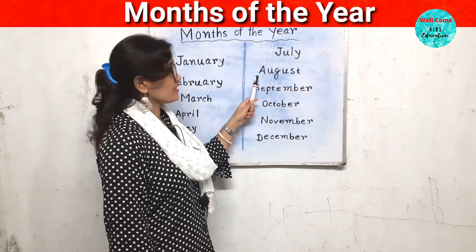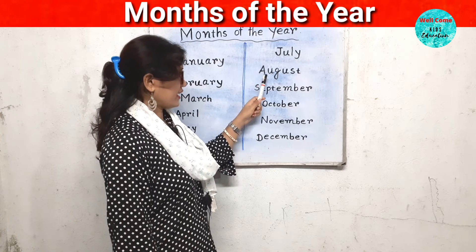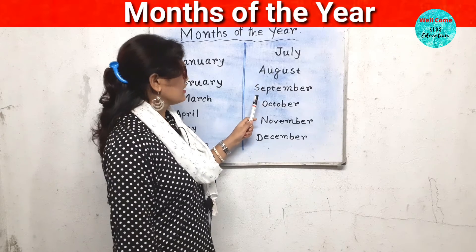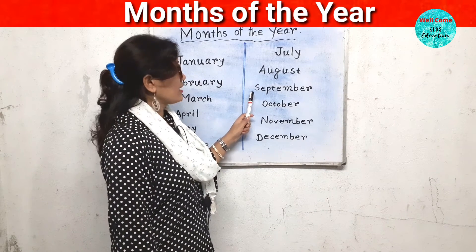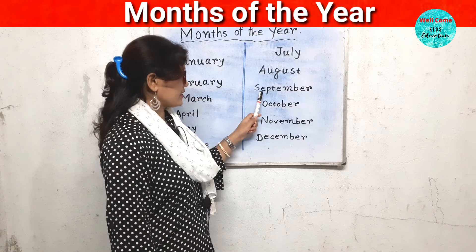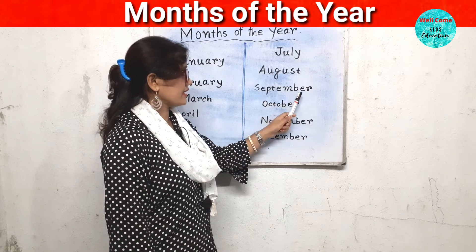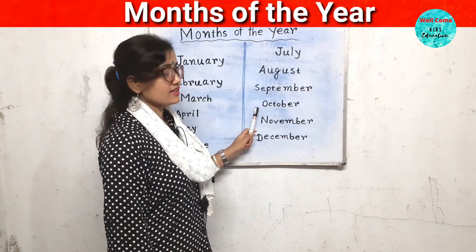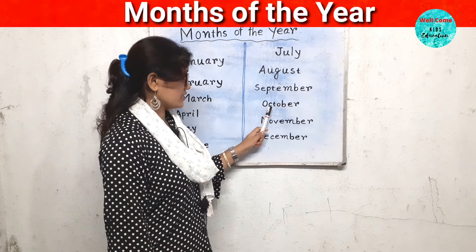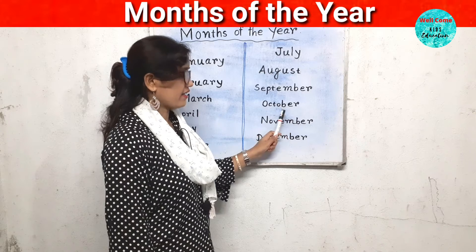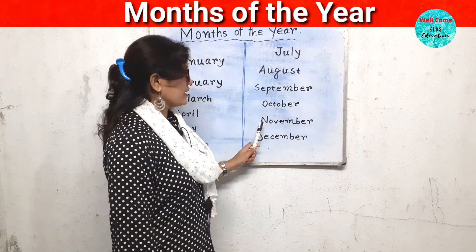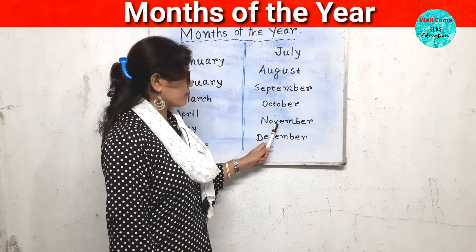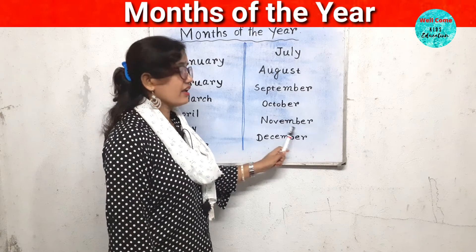The eighth month is August. A-U-G-U-S-T. August. The ninth month is September. S-E-P-T-E-M-B-E-R. September. The tenth month is October. O-C-T-O-B-E-R. October. The eleventh month is November. N-O-V-E-M-B-E-R. November.